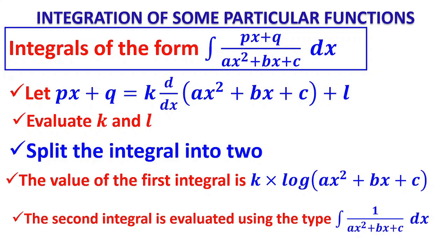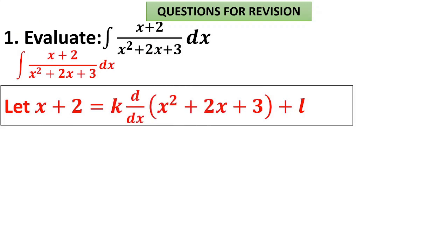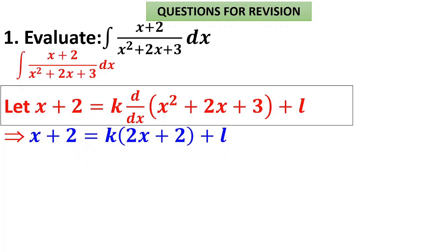Problem 1: ∫(x+2)/(x²+2x+3)dx. We write x+2 = k·d/dx(x²+2x+3) + l. So x+2 = k·(2x+2) + l.